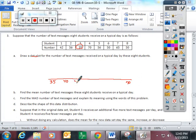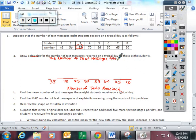35, 40, 45, 50, 55, 60, 65, 70, and of course I'm going to label this because you don't want to just have random numbers. This is number of texts received. And I'm going to title it the number of text messages received on a typical day.